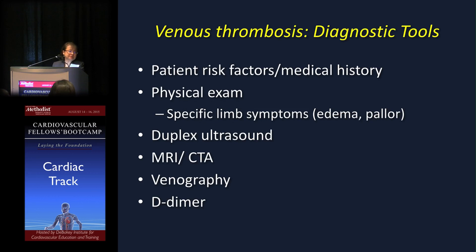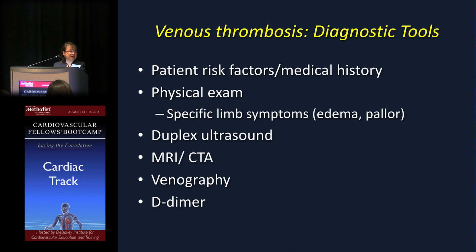So how do we diagnose DVT? You need to take a very careful history, do a physical examination, and look for specific symptoms on any affected extremities. Of course, you use ultrasound, MRI, CTA, venography — though that is being used less and less — and D-dimer.